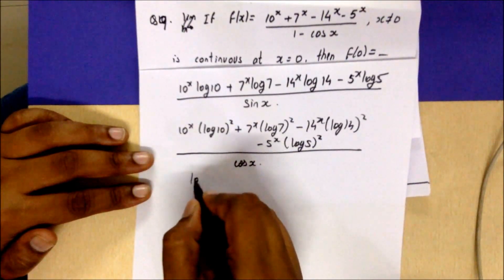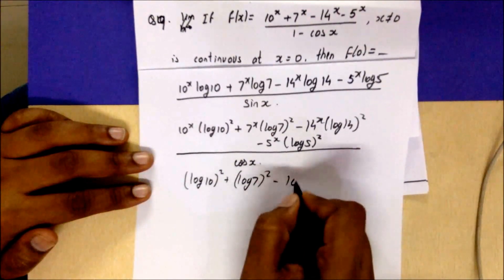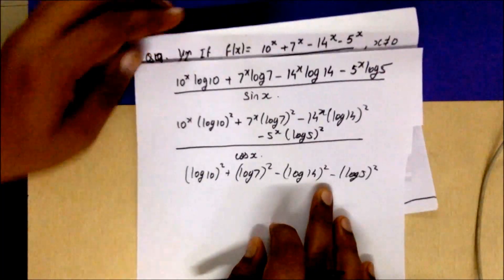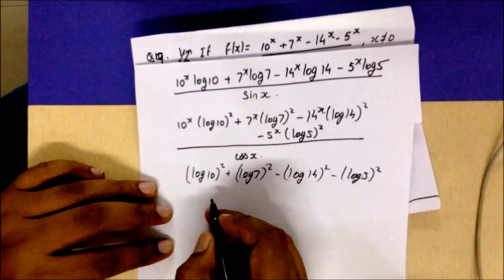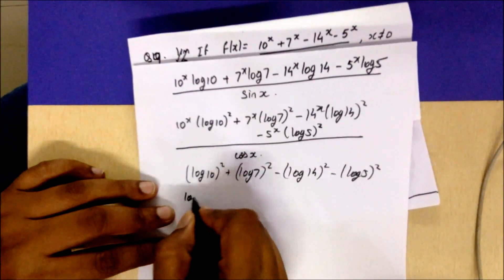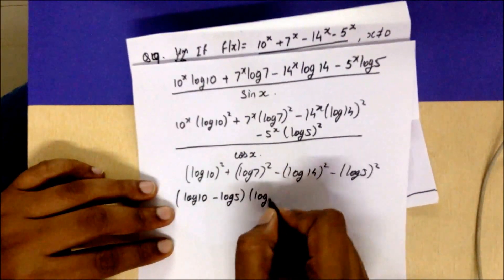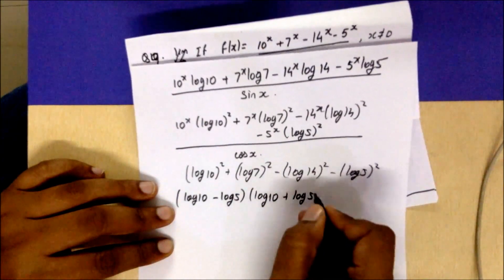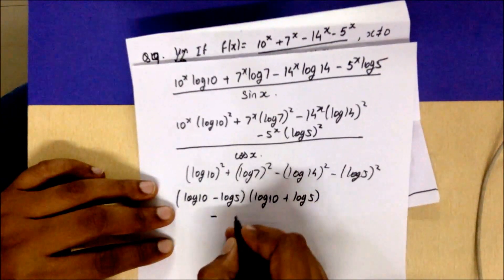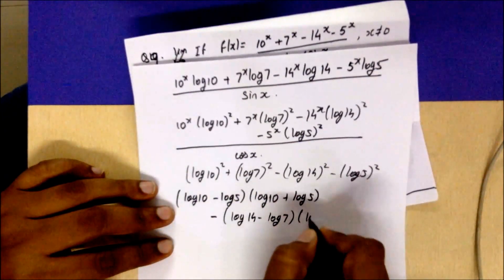The second derivative of the numerator gives 10^x·(log10)² + 7^x·(log7)² − 14^x·(log14)² − 5^x·(log5)², and the second derivative of sinx is cosx. Substituting x = 0 gives a non-zero form: (log10)² + (log7)² − (log14)² − (log5)². We now simplify this — grouping log10 with log5 gives a difference of squares: (log10−log5)(log10+log5).